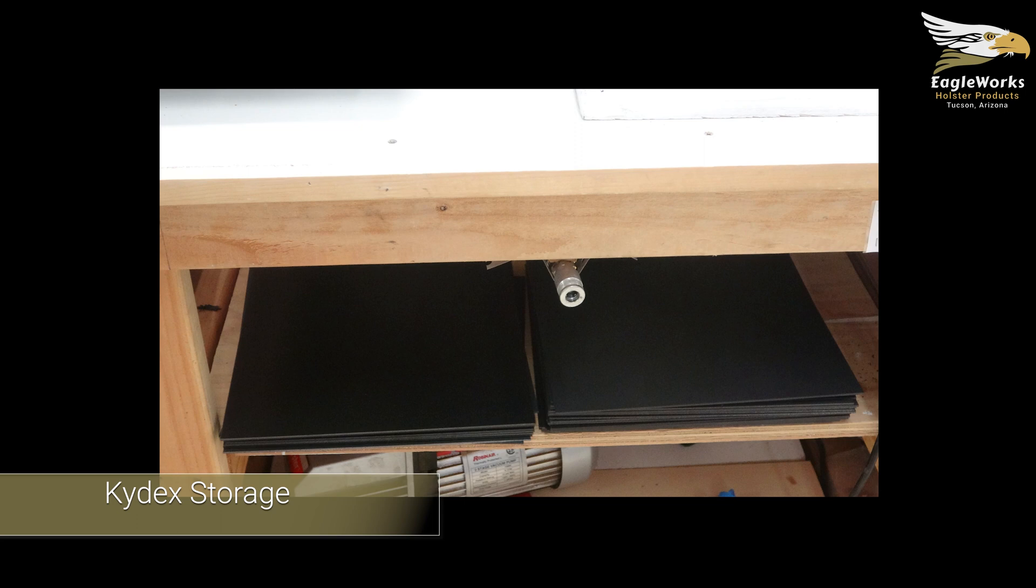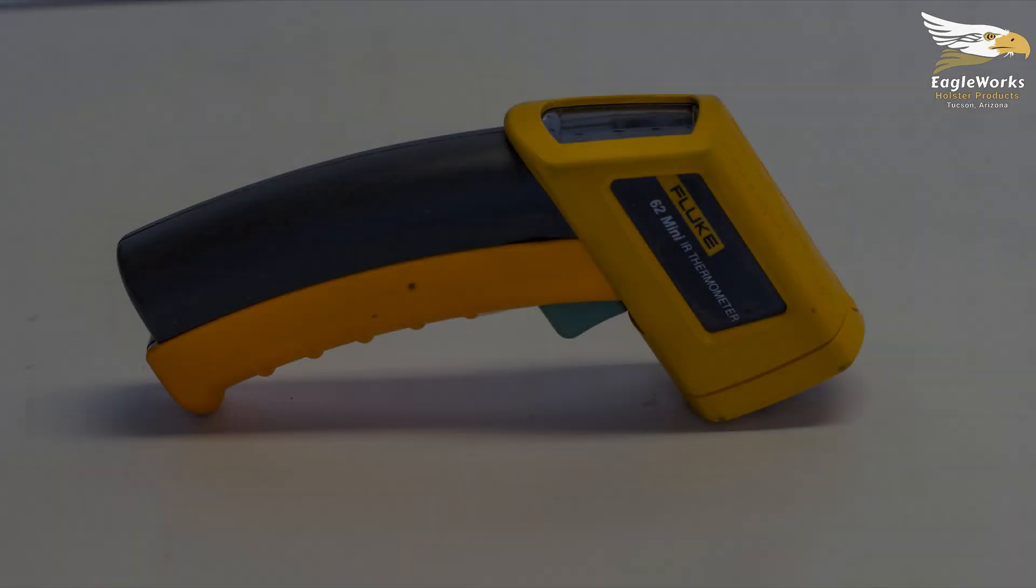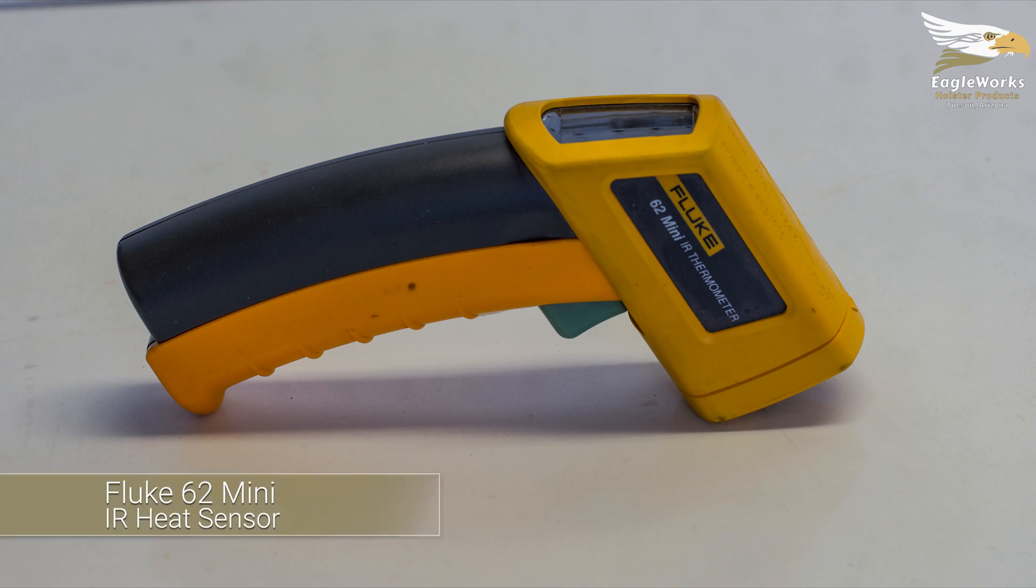You'll want to have your plastic pre-cut and ready to go. If your t-shirt press is new or you've changed holster material thickness, an IR thermometer can be helpful for dialing in your heating cycle.